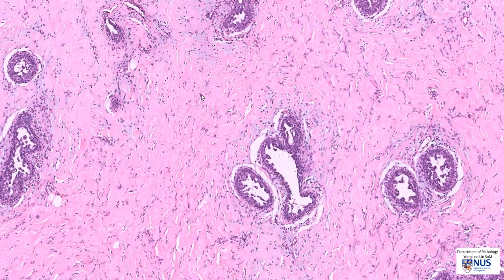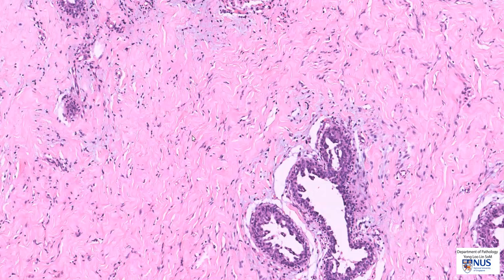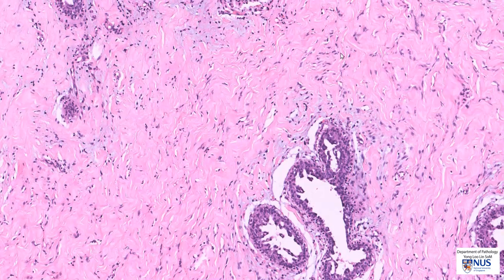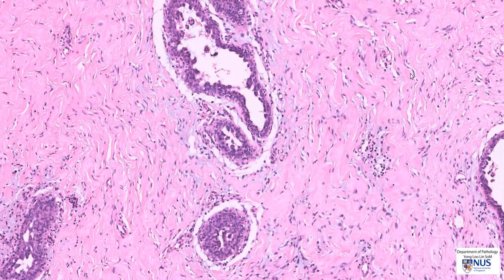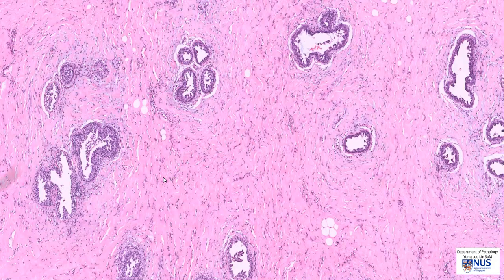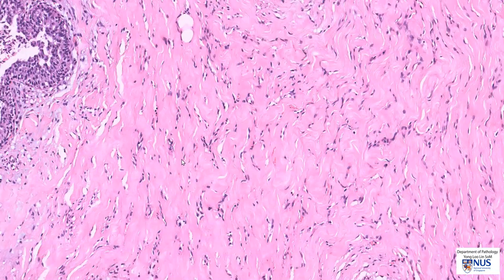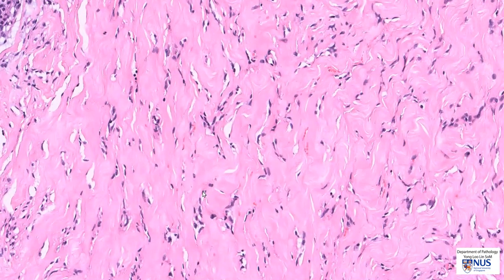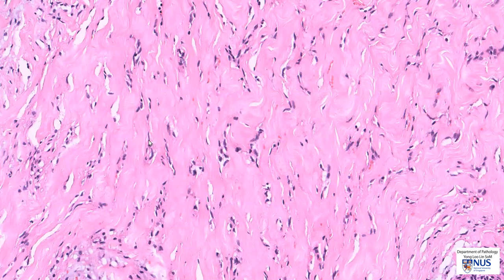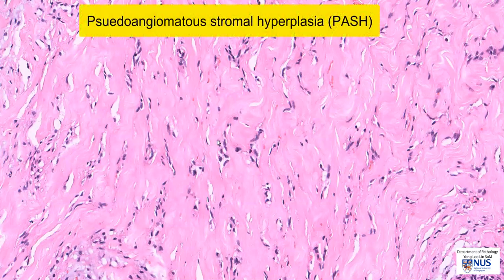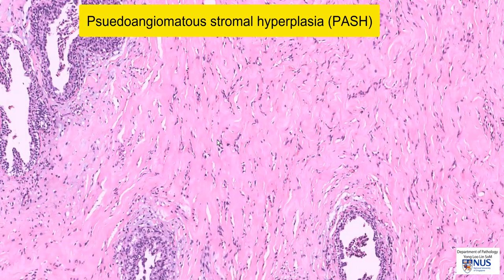In the intervening stroma, we can see a lot of pink bundles of collagen. In some areas, we can appreciate quite a few spindle cells within the stroma. Some of these spindle cells appear to line slit-like spaces, resembling blood vessels but they are not true blood vessels — we don't see red blood cells within them. This appearance of slit-like spaces lined by spindle cells is known as PESH, which stands for Pseudoangiomatous Stromal Hyperplasia, a frequent phenomenon seen in gynecomastia.